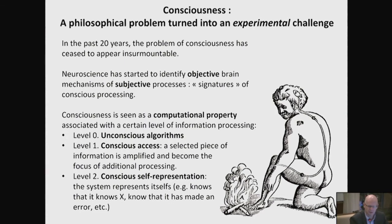There is a first definition of consciousness which I call conscious access. The brain is able to take a piece of information it finds relevant, amplify it, and make it the focus of additional processing. It is computationally useful to dedicate central resources to a specific object for further processing. And then the second level is conscious self-representation — something much less studied, but not unstudiable — where the system represents itself, knows that it knows, knows that it has made an error, and so on.